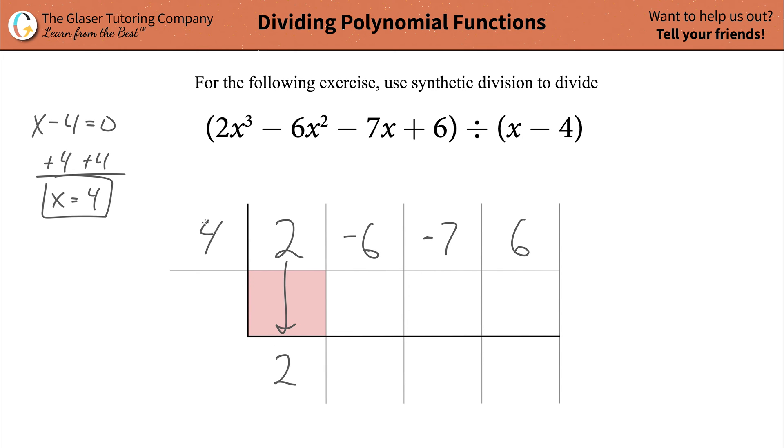Then all you're going to do is take this term outside and multiply it by the term down here at the bottom. And 4 times 2 is simply going to be 8. You're going to put that result in the next cell. Then what you do is add this column together. So negative 6 plus a positive 8 is going to be a positive 2.